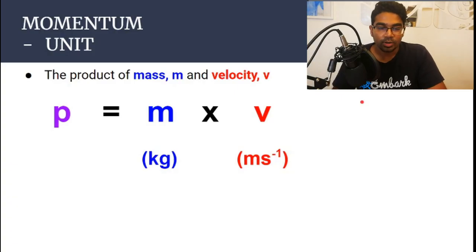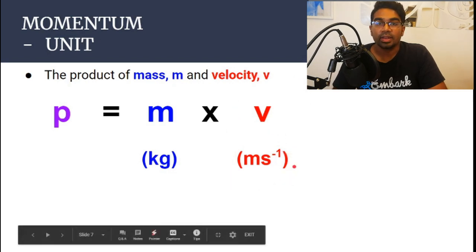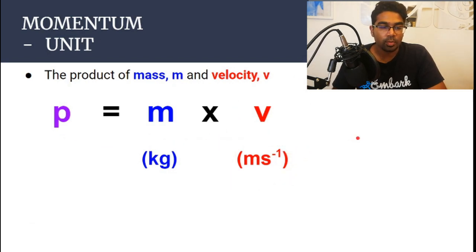The units of a quantity can always be found, can be derived from its formula. So we have mass times velocity, and the units for mass is kilograms and velocity is meters per second. And so, the unit for momentum is kilograms meter per second.